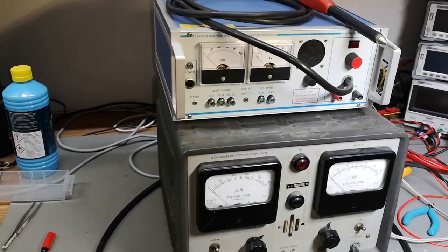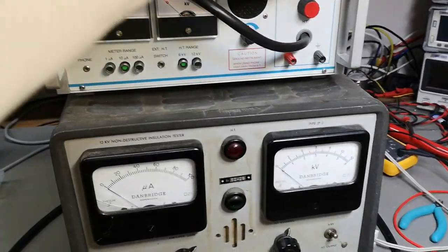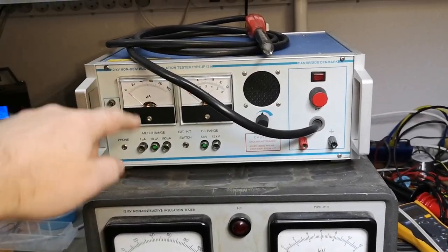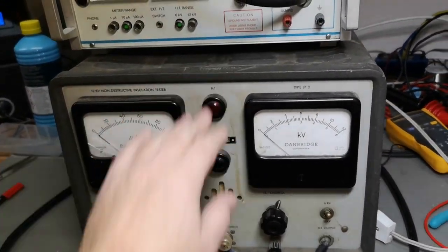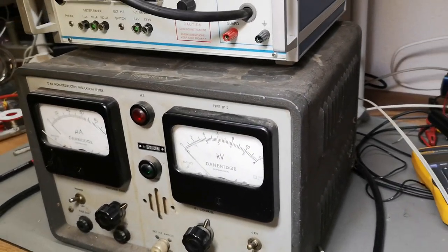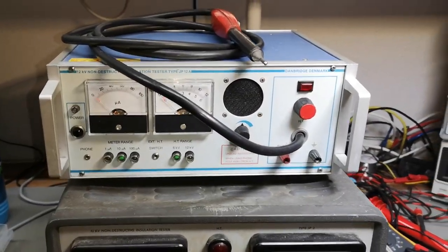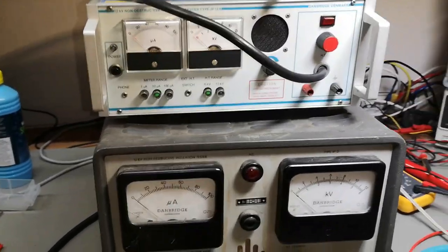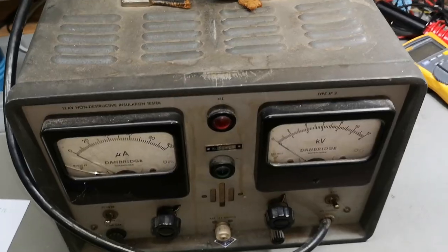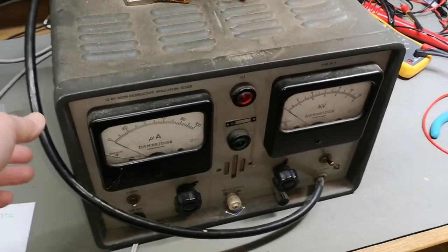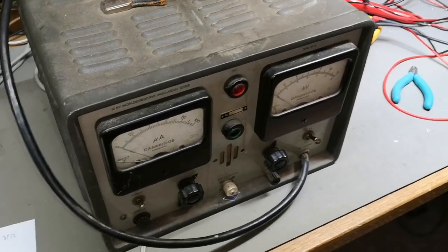So that's the JP12 and that is the JP2, good old antiques. How about we put them on a scale and see the weight difference? That was tough. So that's two kilos versus 10 kilos. Oh my god.